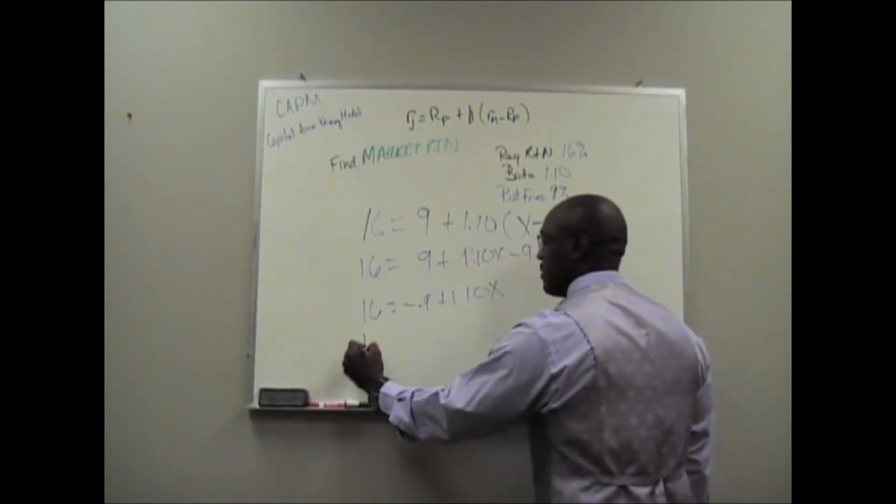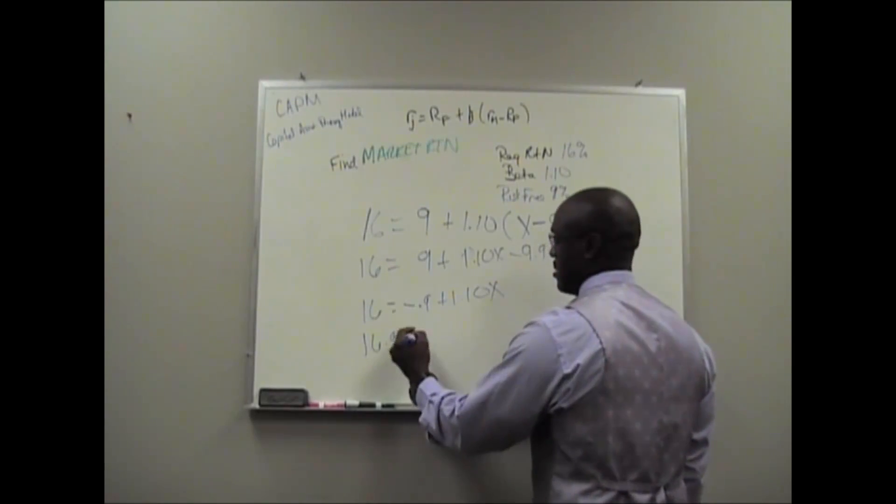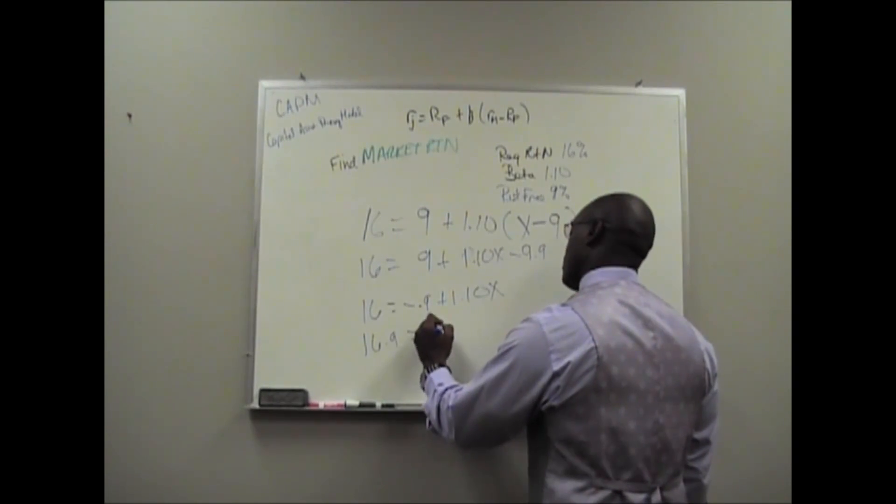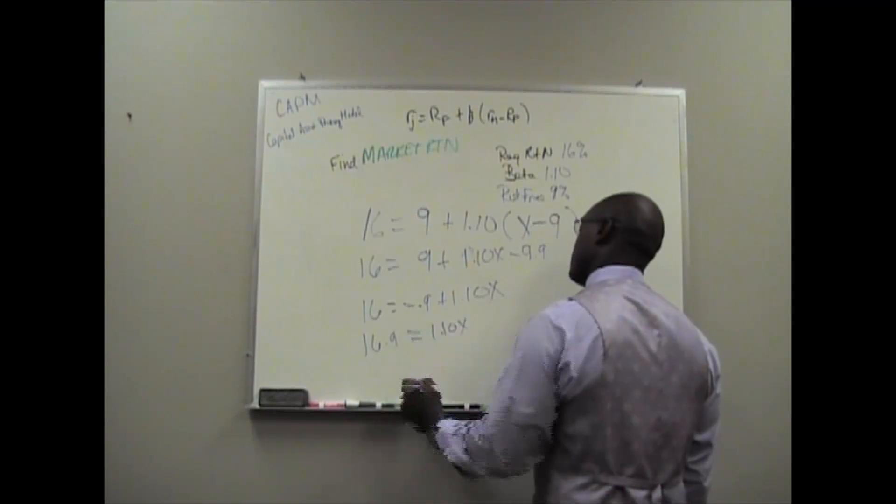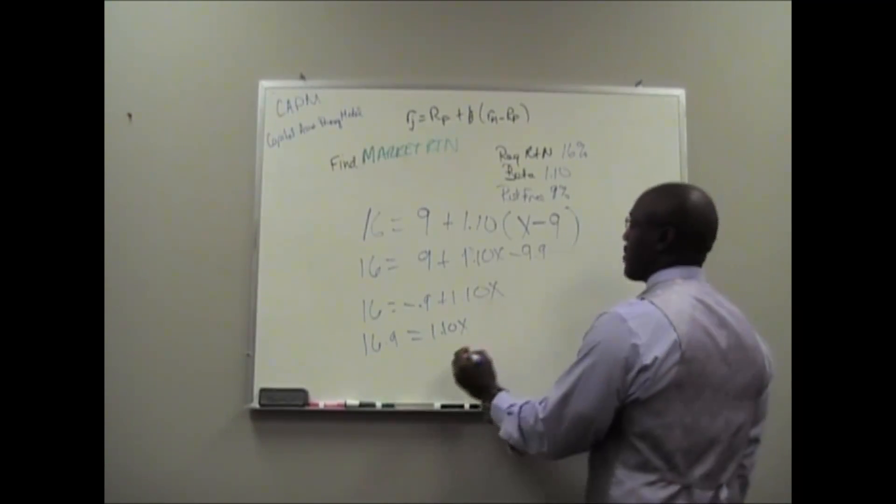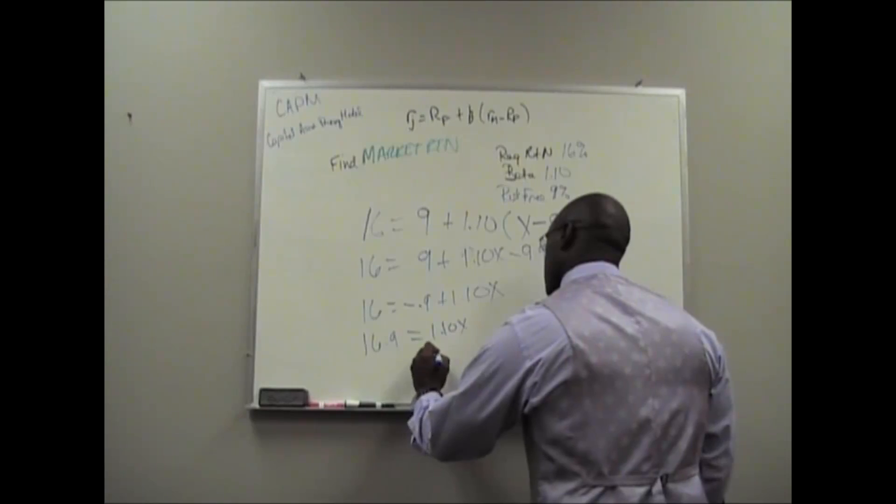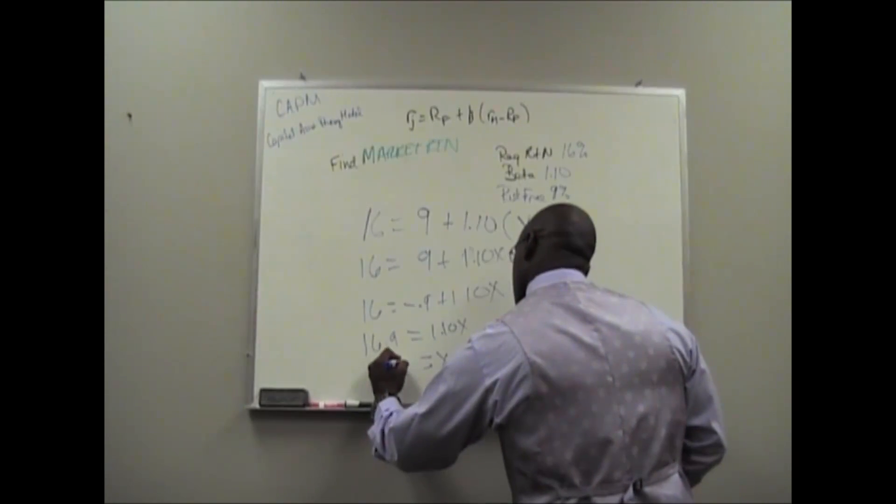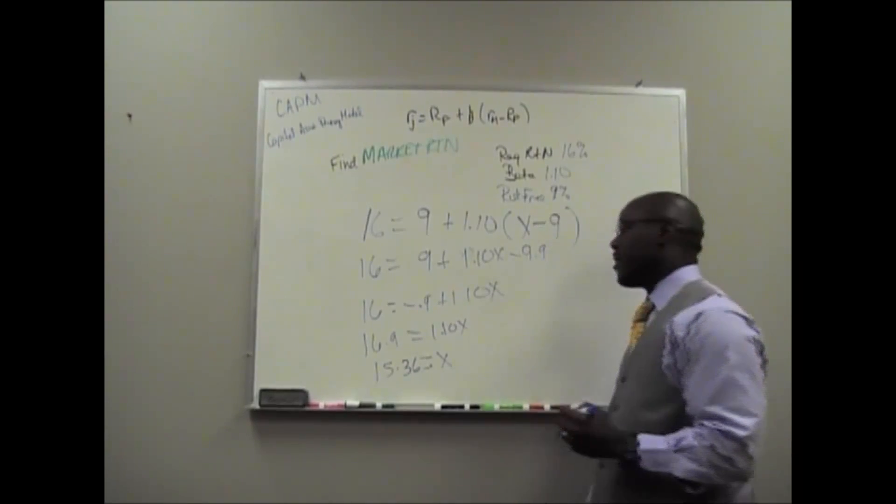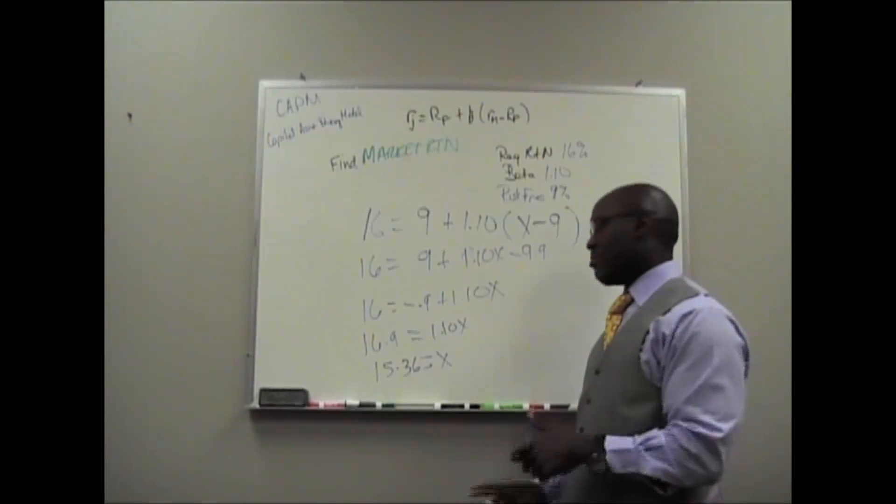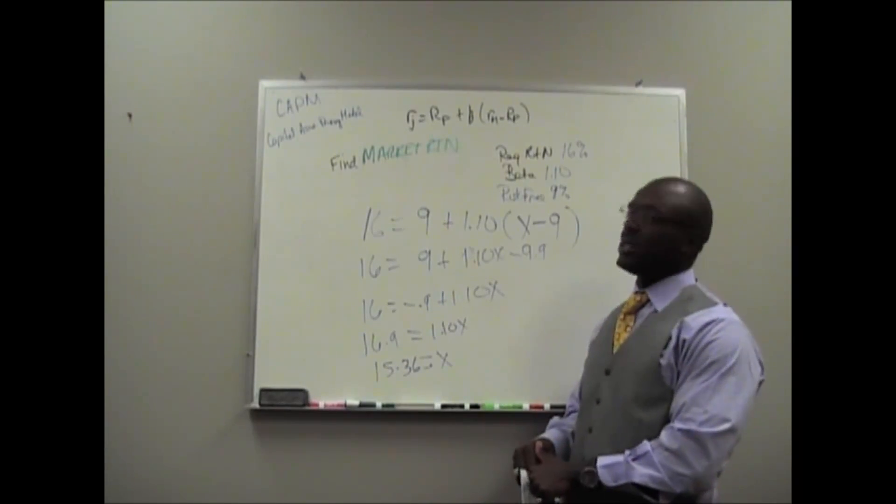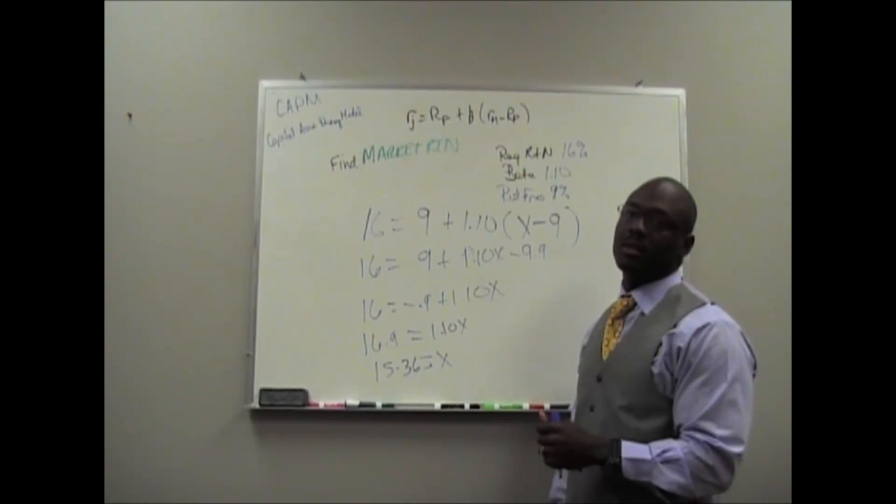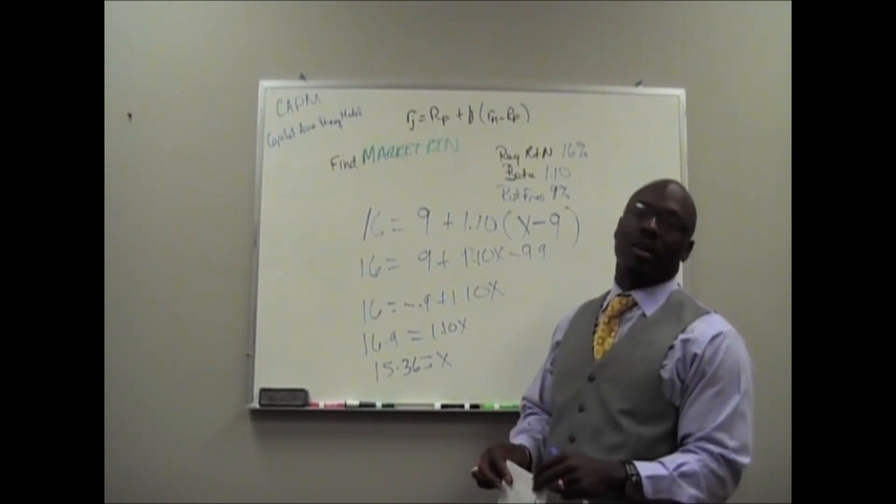We'll move this to the other side. That would be positive. So 16 minus 9 plus 9.9 equals 1.10X. We solve for X. So the market return is 15.36. We'll come back and do our last problem.